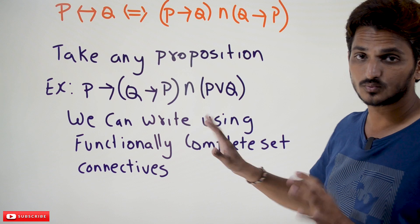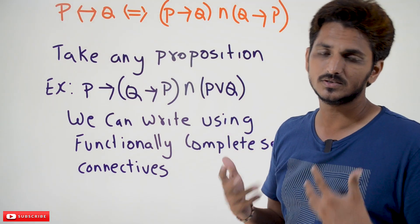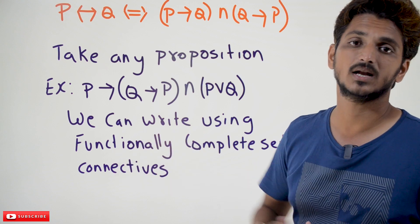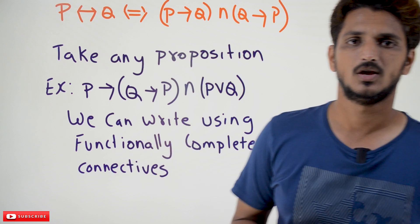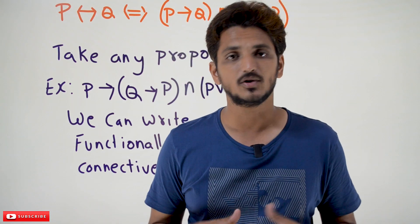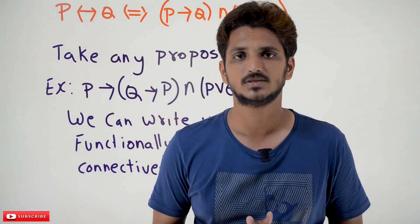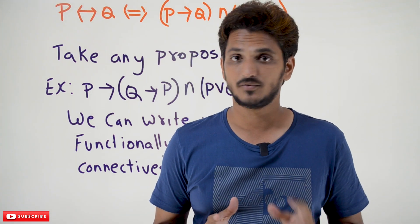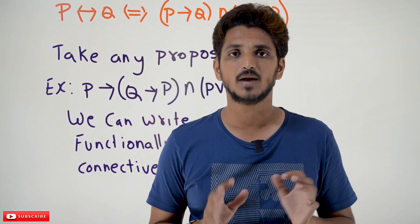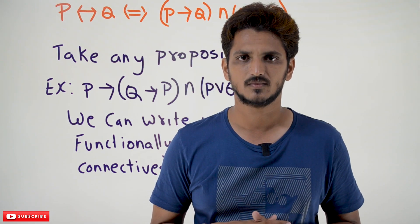You take any proposition, we can write it in the form of using the connectives negation and conjunction, or negation and disjunction. That is the key point you need to understand. We are going to do examples on this in our coming classes. Hope you understand what functionally complete set means. If you have any questions, please post them in the comment section below. Thanks for watching. If you haven't subscribed to our channel, please subscribe and press the bell icon for the latest updates. Thank you.